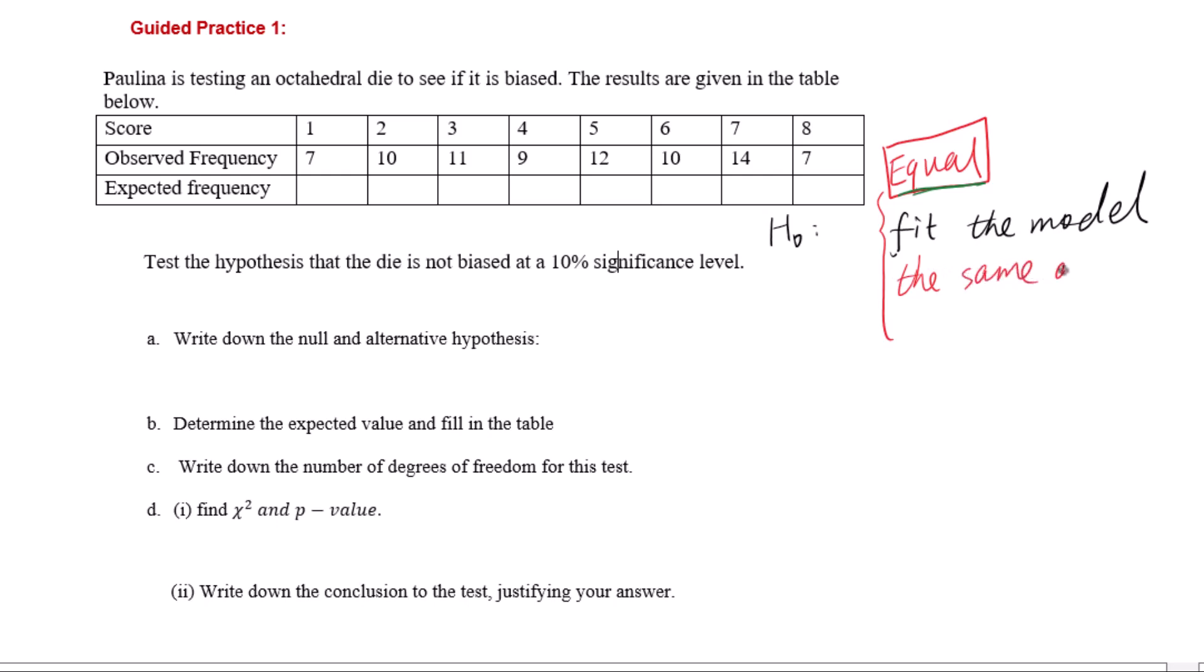H1 will be opposite to H0. For H0 in this problem, the die is not biased, or you can say the die is fair. Then for H1, the die is biased.